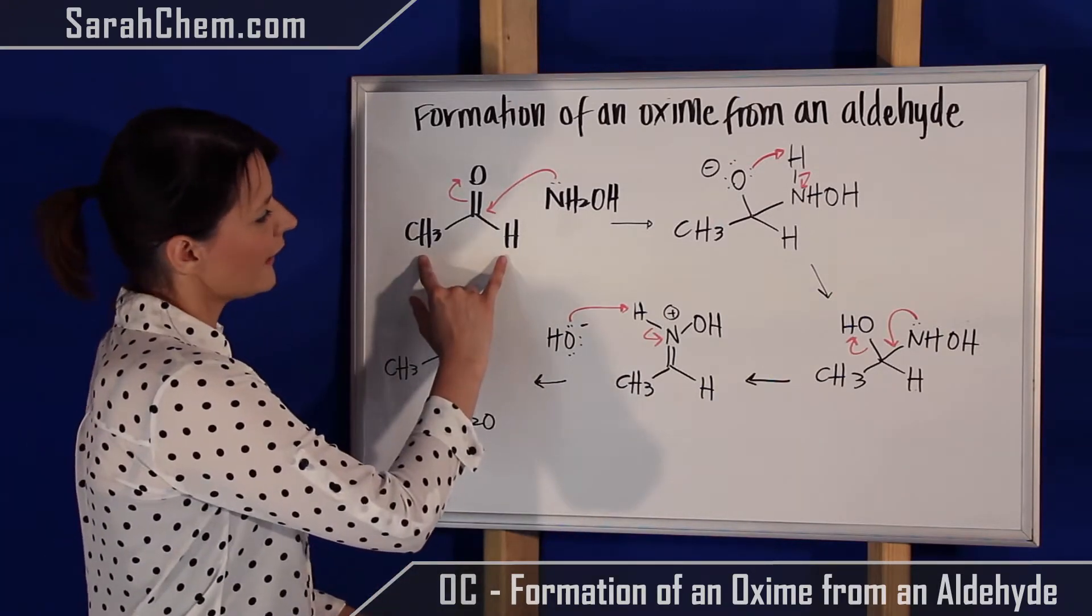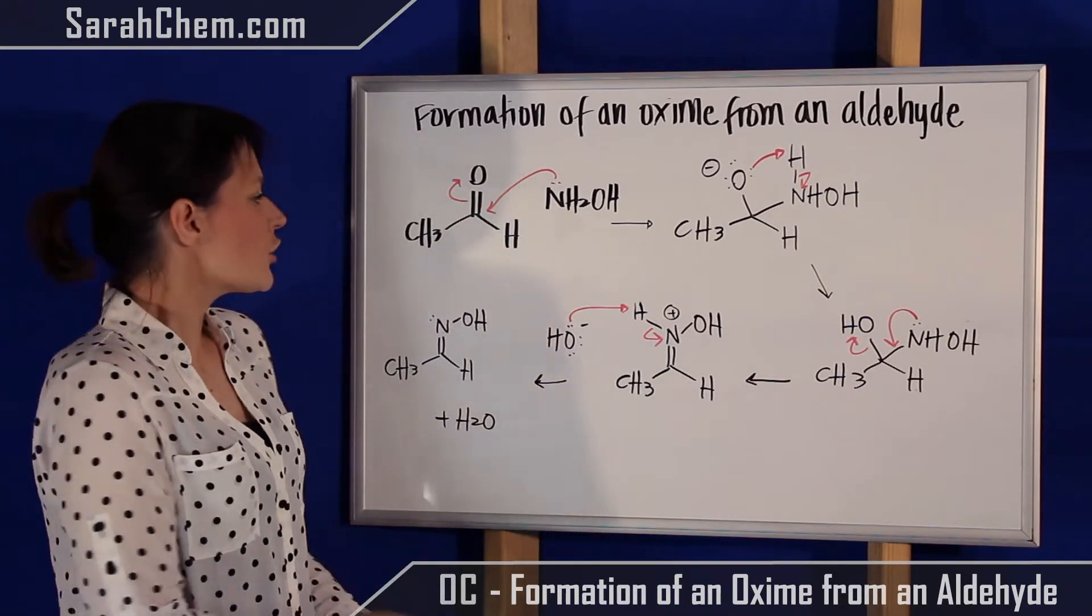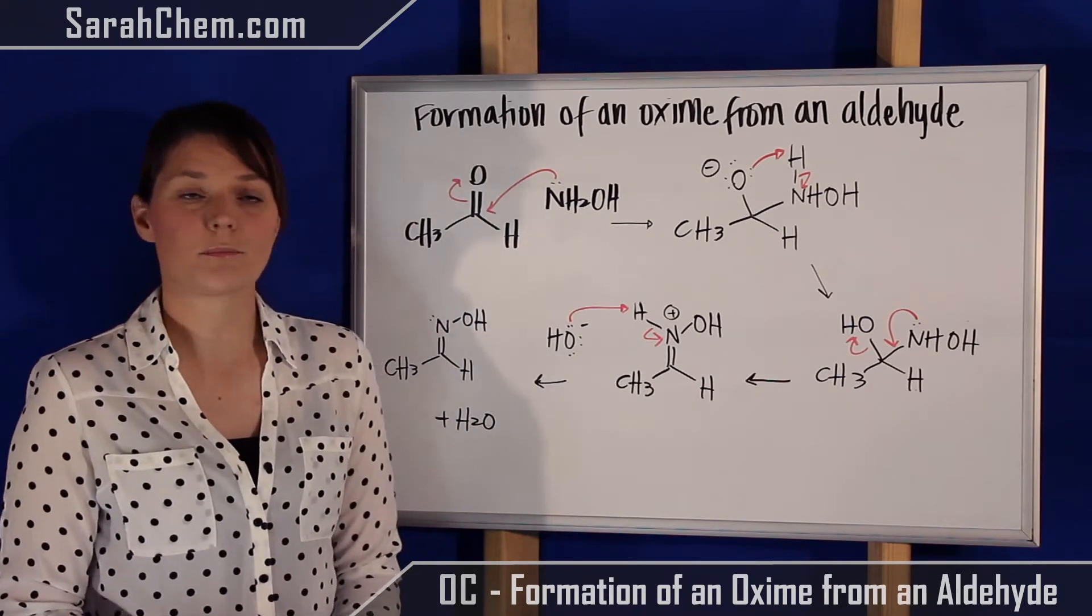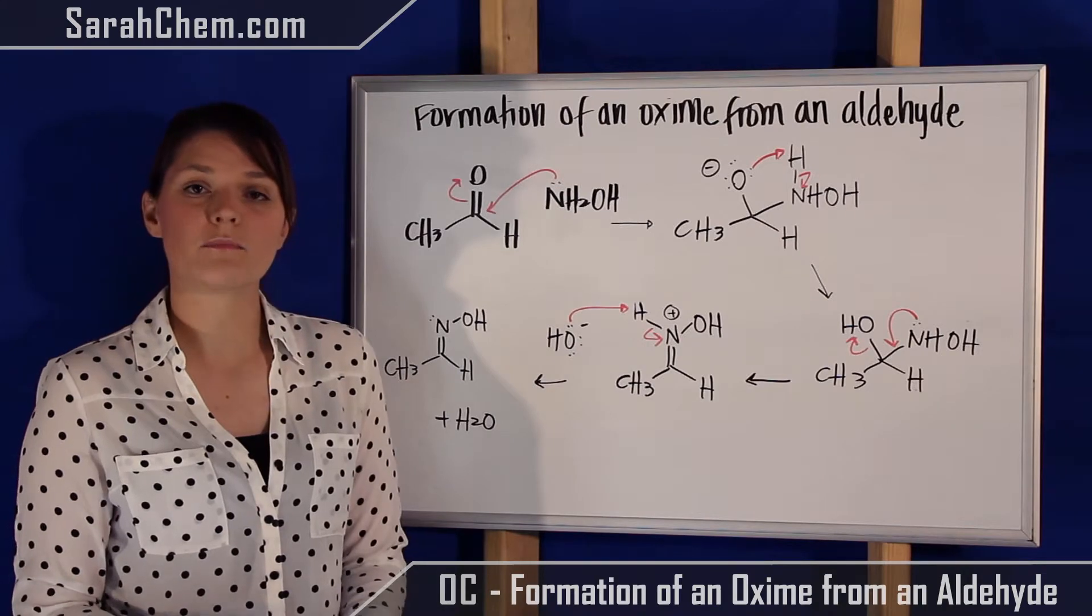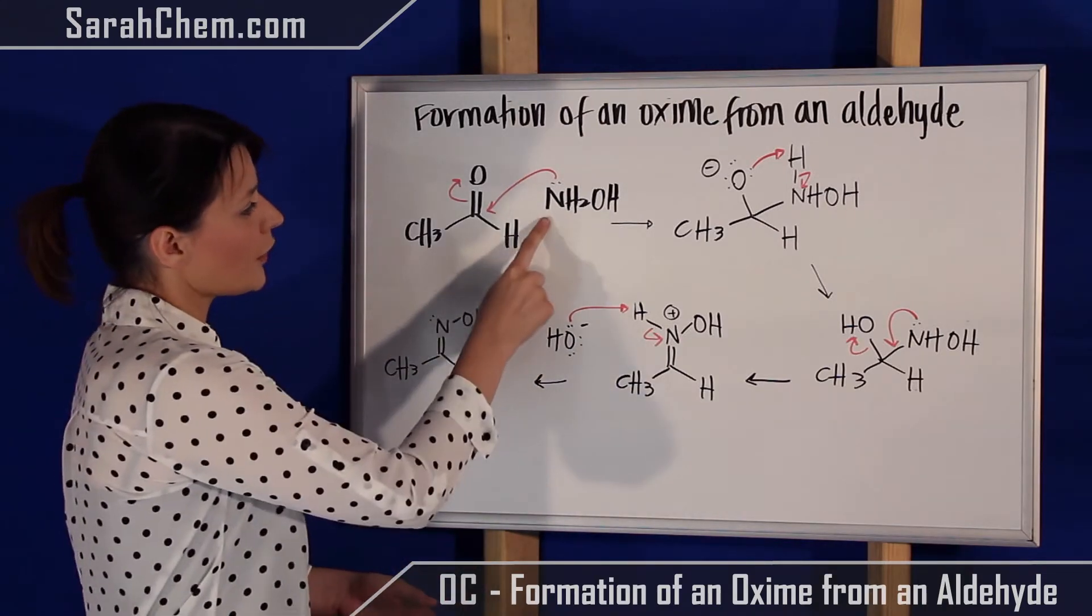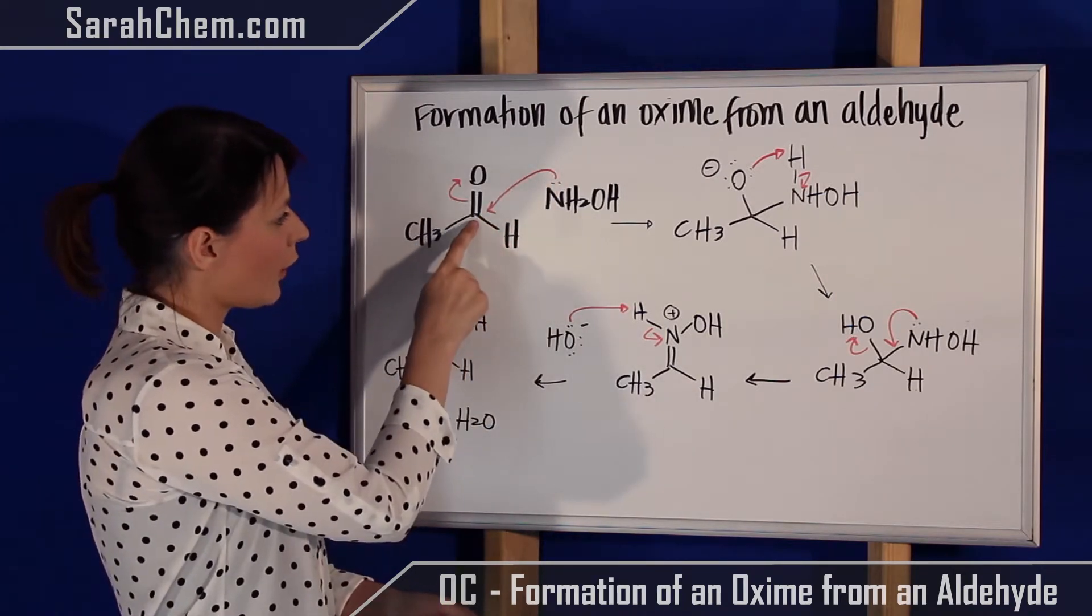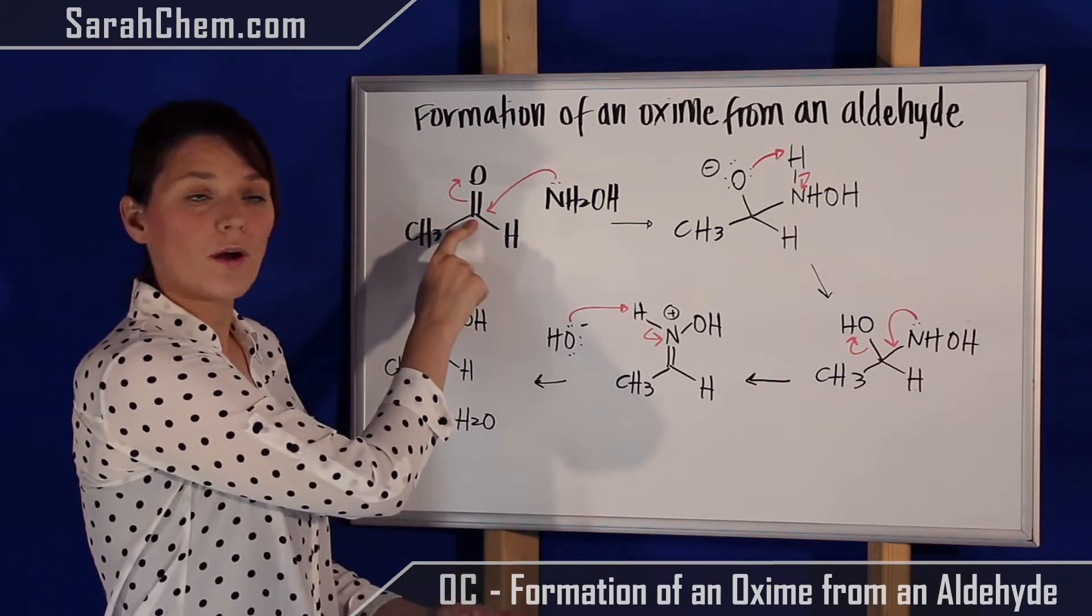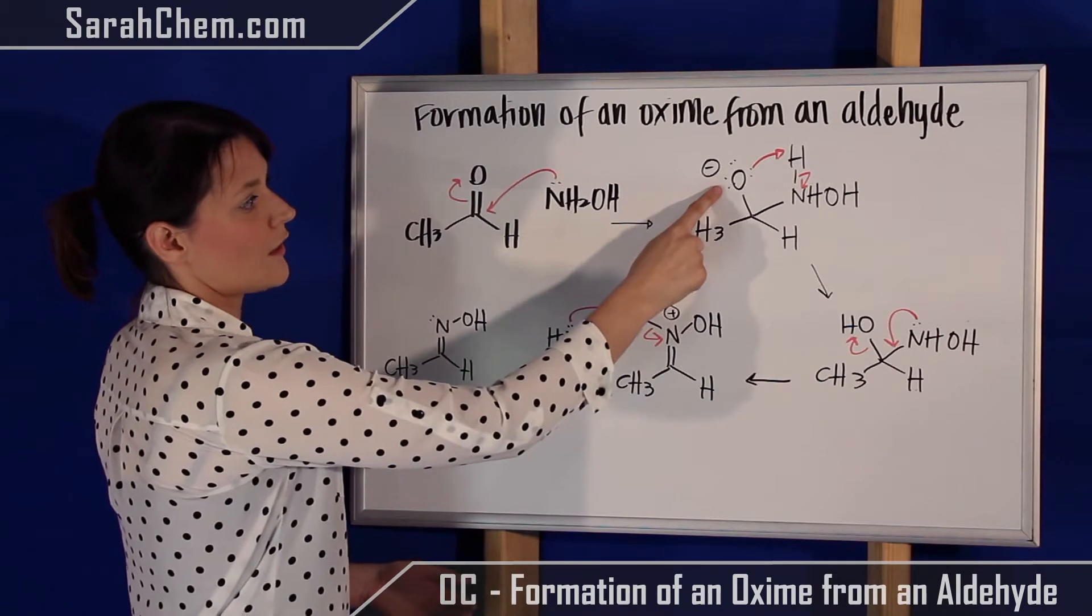Over here we have our aldehyde, and this here is hydroxyl amine. This is going to be our nucleophile. Remember that this carbon in a carbonyl is going to be slightly positive because it's attached to an electronegative oxygen, and that partial positive makes it a very good attack point for nucleophiles. With the lone pairs on this nitrogen group here, we're going to have it come and attack that carbon position. That carbon would then have too many bonds, so our pi bond will break, and we're going to kick that up and dump those electrons onto this oxygen.